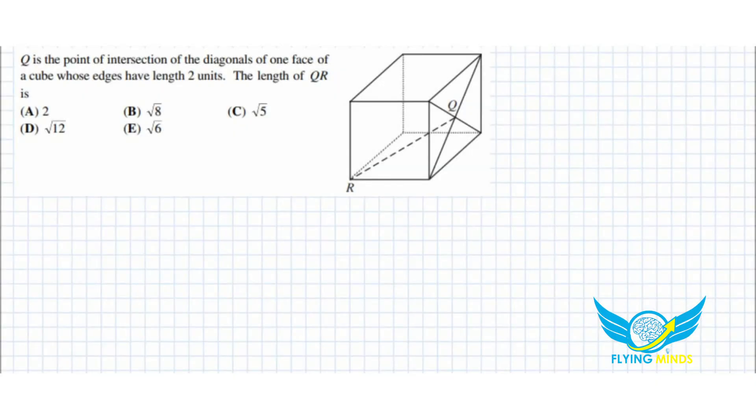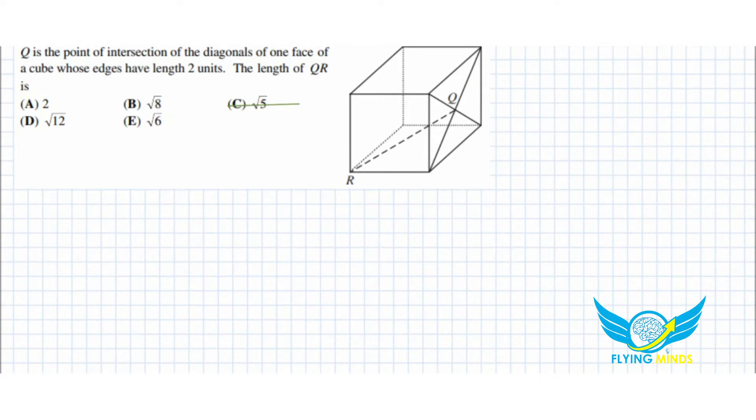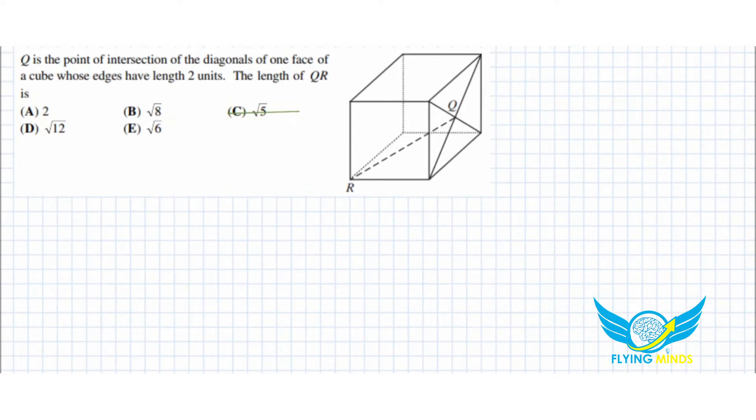Hello, everybody. I'm posting a solution to the question that was posted yesterday. We are given Q is the point of intersection of diagonals of one face of a cube whose edges have length two units.